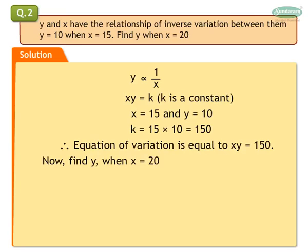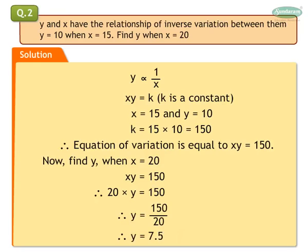Let us find Y when X is equal to 20. Substitute X in the equation XY is equal to 150. Therefore, 20 into Y is equal to 150. Therefore, Y is equal to 150 upon 20. Therefore, Y is equal to 7.5.